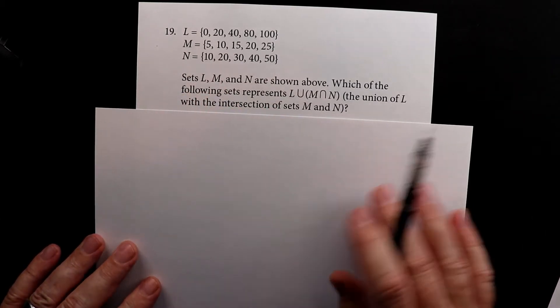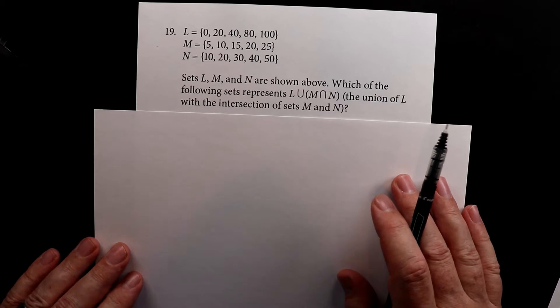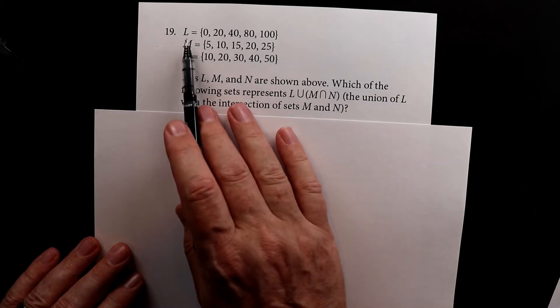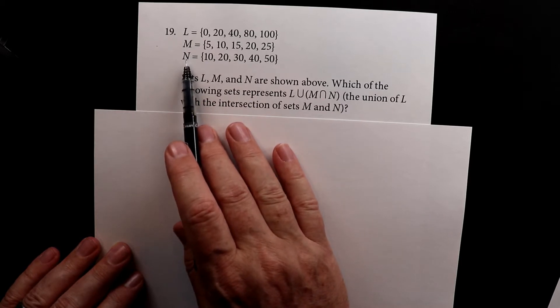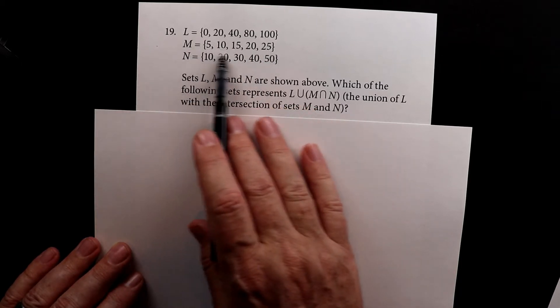This is number 19 for the second test of the Accuplacer, and here we're looking at three different sets. We have set L, set M, and set N, and in each one of them they have numbers.